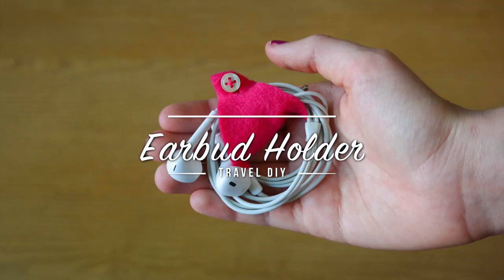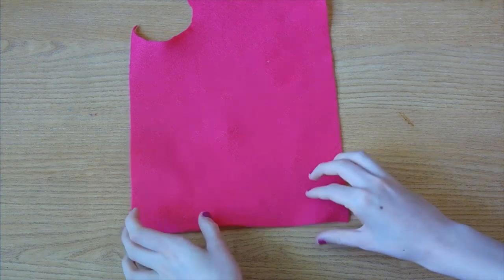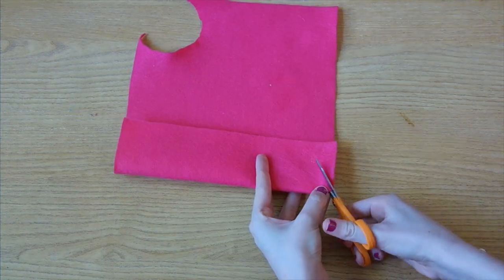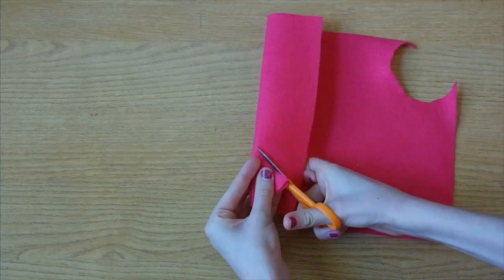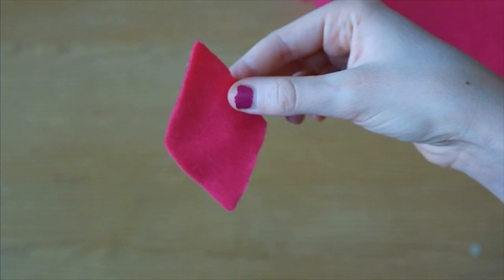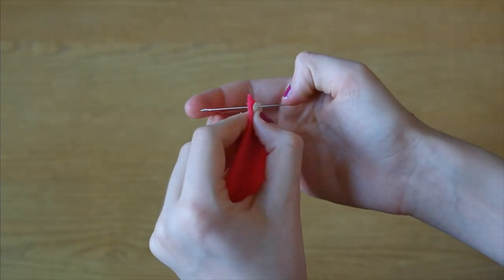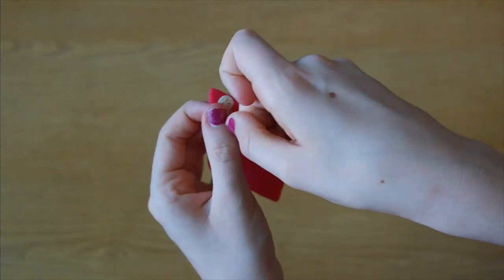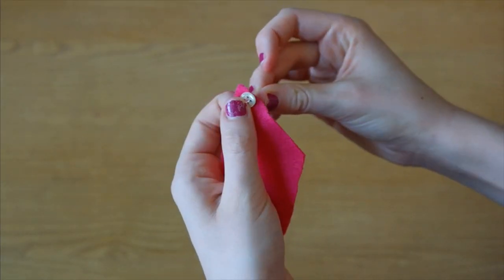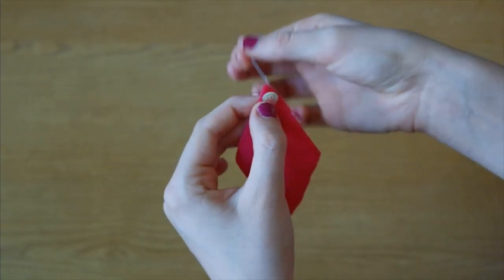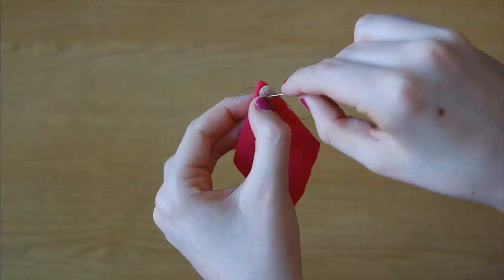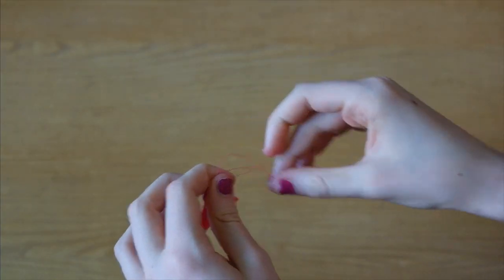The third travel DIY is this earbud holder. Take a piece of fabric and fold it in half. Cut out a triangle. When you open it up you should have a diamond shape. On the tip of one end of the diamond sew on a button. I'm just pushing the needle through a hole from the back to the front and threading it through another hole to the back again. I repeated this until it was secure and tied a knot in the back with my thread.